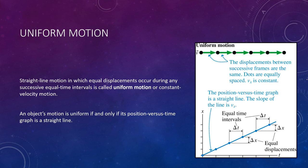The figure on the right shows a motion diagram and a position versus time graph for an object in uniform motion. Notice that the position versus time graph for uniform motion is always a straight line. This follows from the requirement that all values of displacement, delta x, corresponding to the same time interval, delta t, must be equal. An alternative definition: an object's motion is uniform if and only if its position graph is a straight line. Equal intervals of time yield equal intervals of displacement.